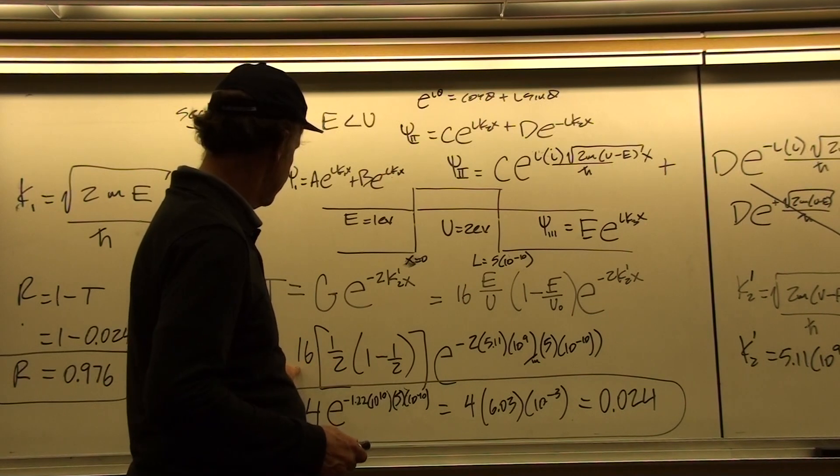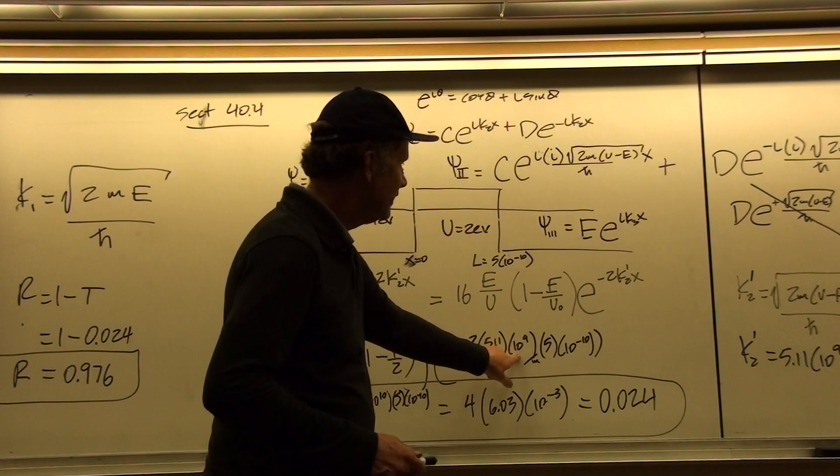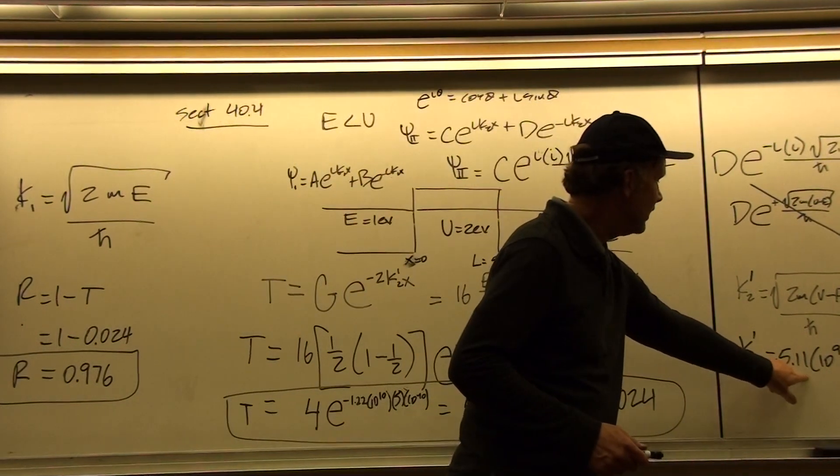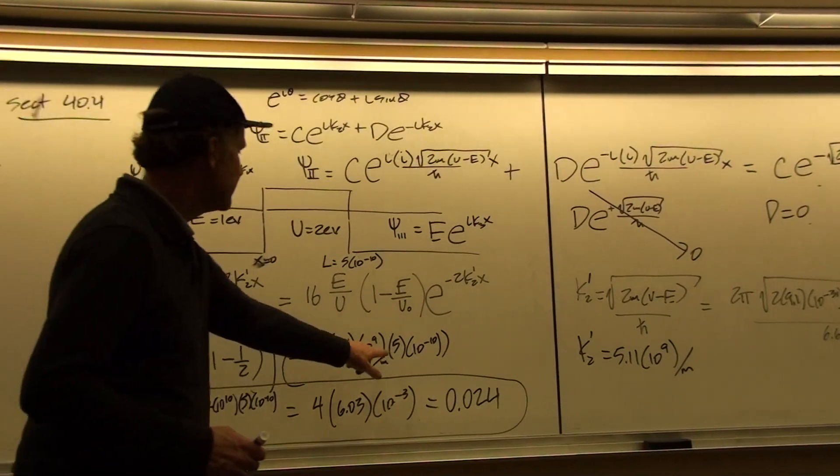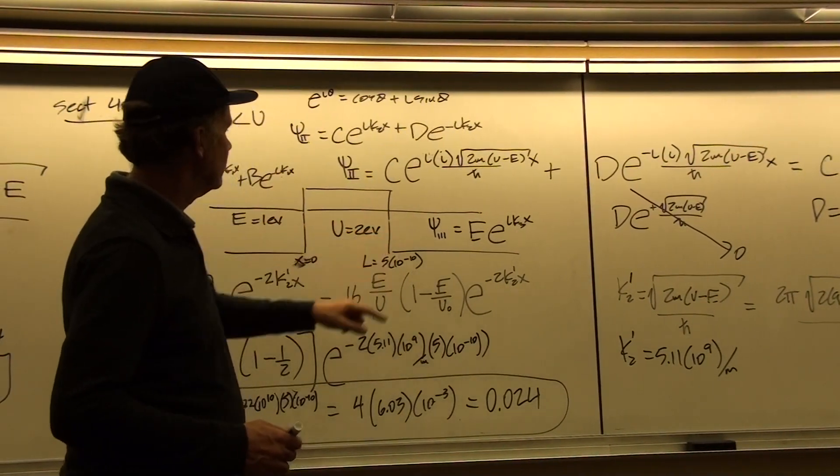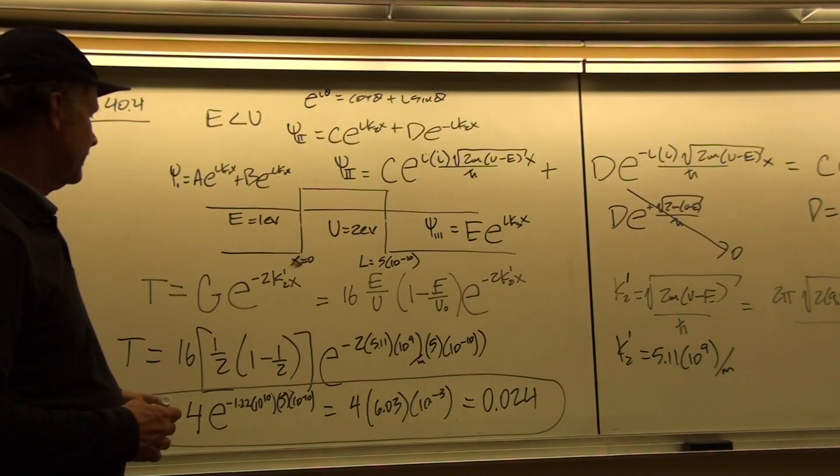that's 1 half times 1 half is 1 quarter, times 16 is 4, times e to the minus 2, times k2 prime which we saw before, 5.11 times 10 to the 9, times x, which is the length or width of this barrier which is 5 angstroms or 5 times 10 to the minus 10.